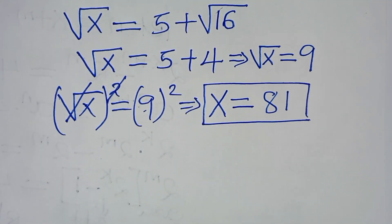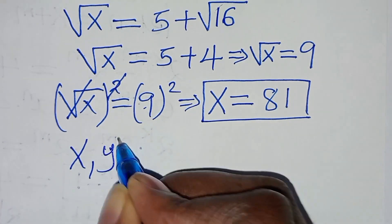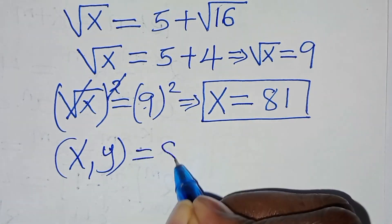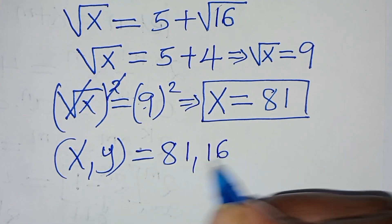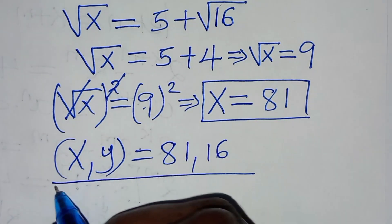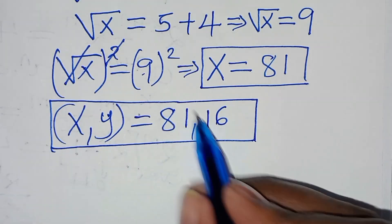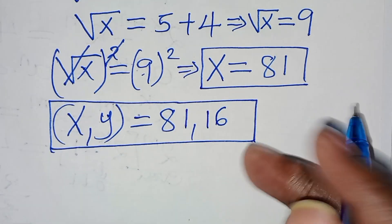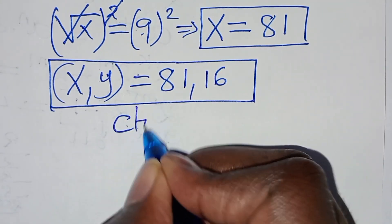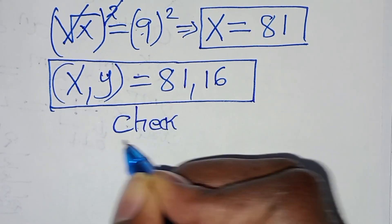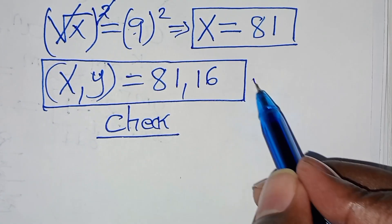So we have the value of x, which is 81, and the value of y, which is 16. The set of solutions is x equals 81 and y equals 16. The next step is to check if these values of x and y satisfy the equations.